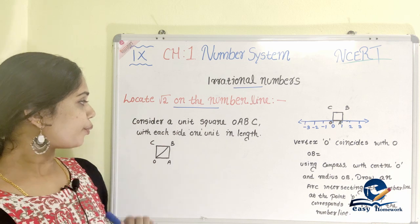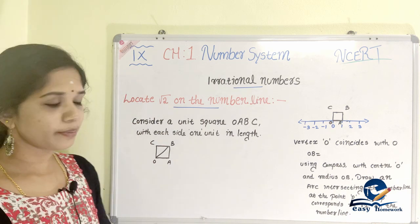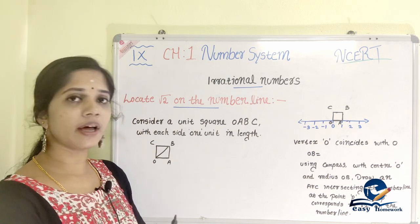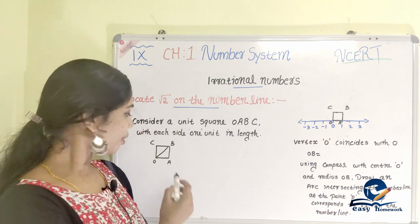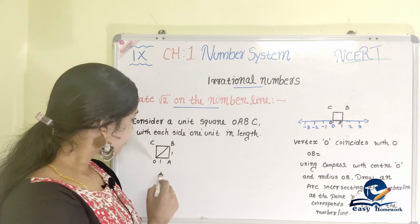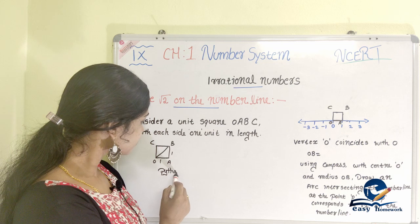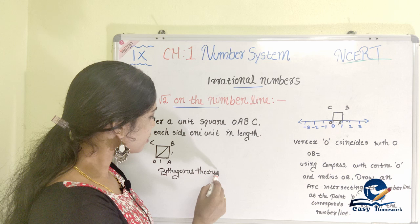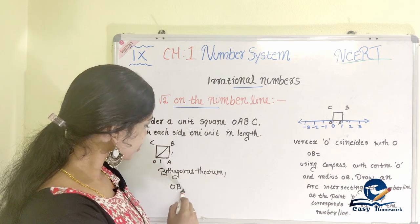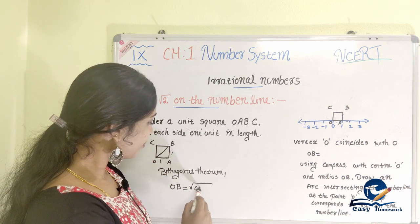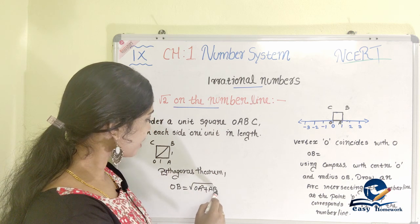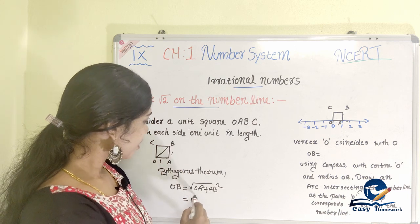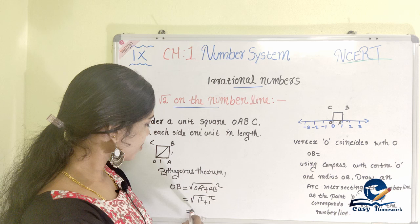We should consider how to draw a unit square. We will consider a unit square with vertices O, A, B, and C. OB equals the square root of OA squared plus AB squared, which is 1 squared plus 1 squared.